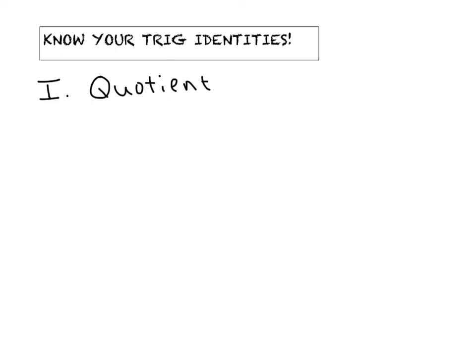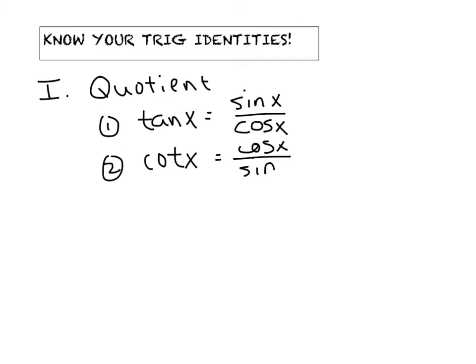Basically the idea that the tangent of x is really just the sine of x divided by cosine of x, or the idea that cotangent of x could be rewritten as cosine of x divided by the sine of x. So those are the two quotient identities we've seen.